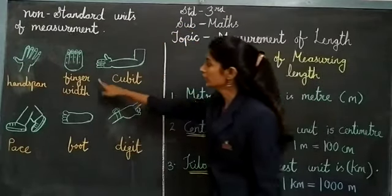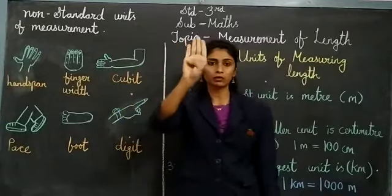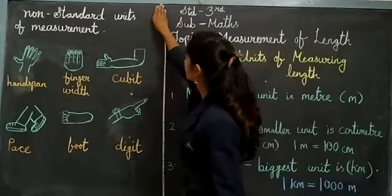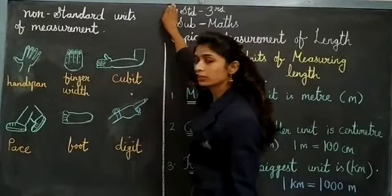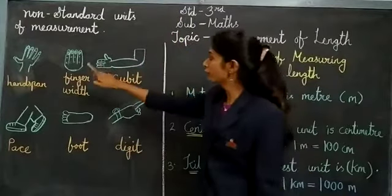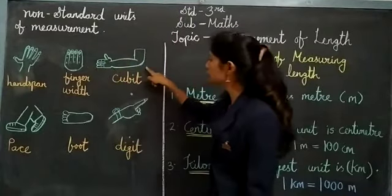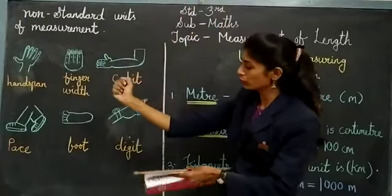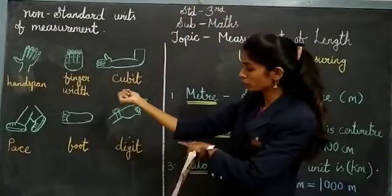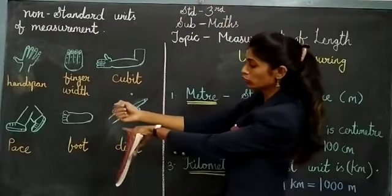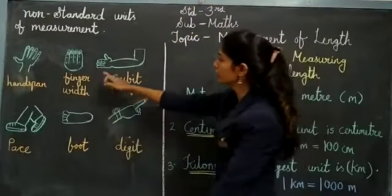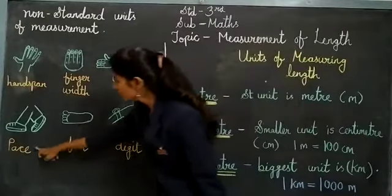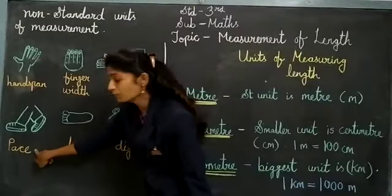Then the second is finger width. When I am talking about finger width — 4 fingers, then 8 fingers — this is called finger width. Then next is cubit. If you look at your cubit, from your elbow to your hand fingers, this measurement is called cubit.